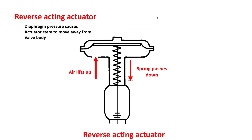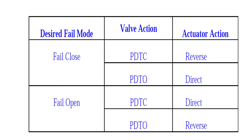In a reverse acting actuator, the diaphragm pressure causes the actuator stem to move away from the valve body. So to summarize: in a direct acting actuator the diaphragm causes the stem to move towards the valve body, and in a reverse acting actuator the diaphragm pressure causes the actuator stem to move away from the valve body.